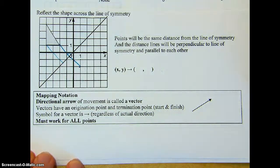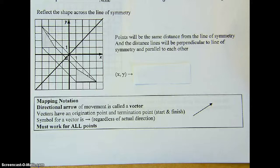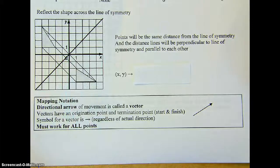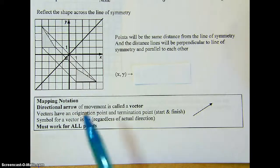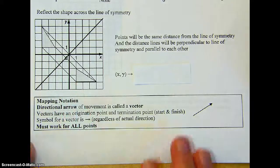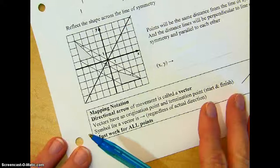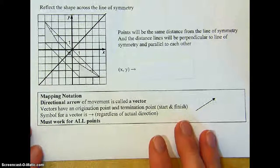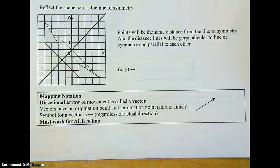We need to make a notation to explain how the points moved — this is called mapping notation. To do mapping notation, we use a directional arrow of movement called a vector. The symbol for a vector is an arrow, and it always looks the same regardless of the actual direction of movement. We start with our original point and describe how it transformed to its new location.